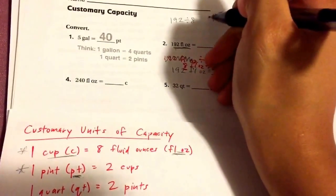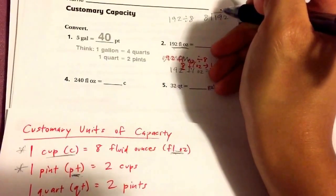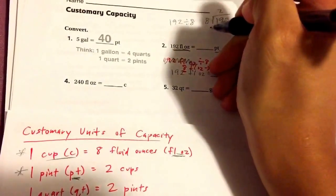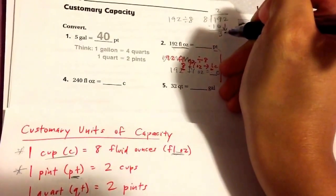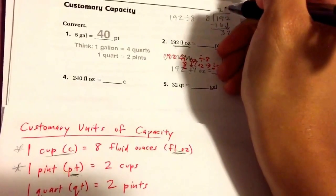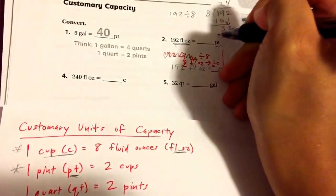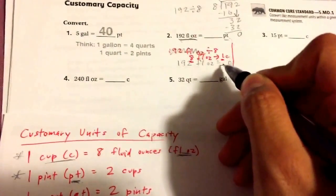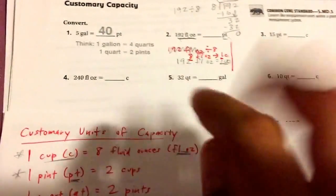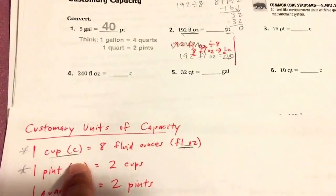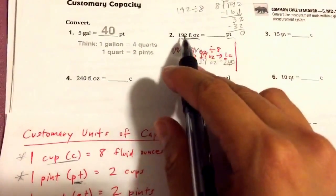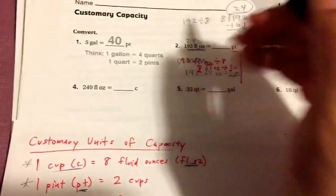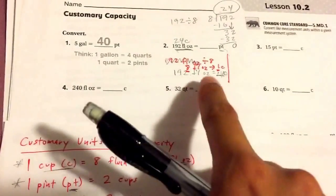So we're going to do 192 fluid ounces divided by 8. Put it inside the house: 8 times 2 is 16, minus equals 3 and regroup the 2, 8 times 4 is 32 exactly. So we have 24 — and we have 24 cups. Because all we did so far was change the fluid ounces to cups. So we have 24 cups. You know that 192 fluid ounces is the same as 24 cups, because to get from fluid ounces to cups, we divide by 8. 192 divided by 8 is 24 cups.